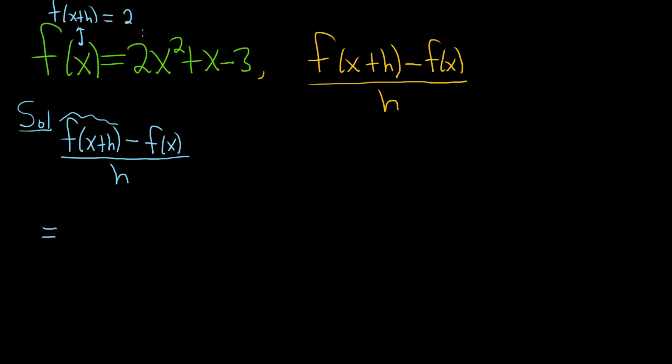So it's 2, and instead of x, it's x plus h squared, and then plus, and then instead of x, it's x plus h. I don't know why I put it in parentheses, and then minus 3. So this whole thing here is the f of x plus h.